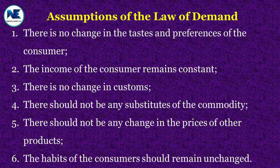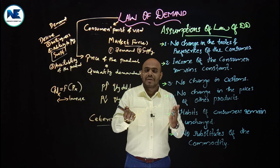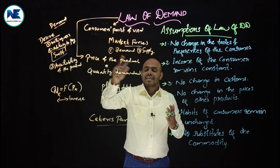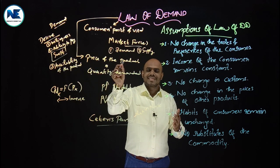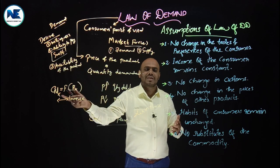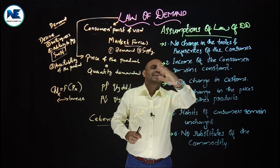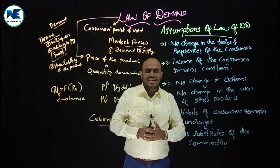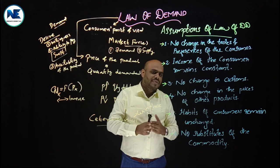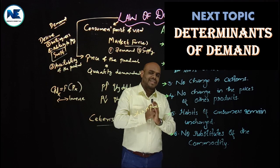This topic is a very clear and important area of microeconomics. To summarize: law of demand background includes market forces, desire, willingness, ability to pay, availability of the product, the law of demand statement, and its assumptions. In the coming video, we will discuss the determinants of demand. Thank you.